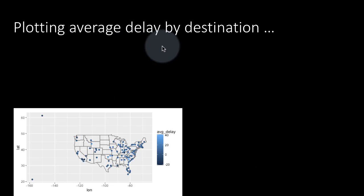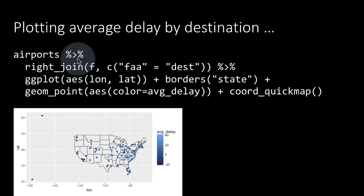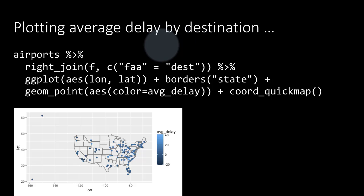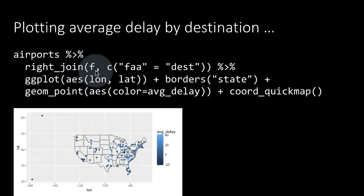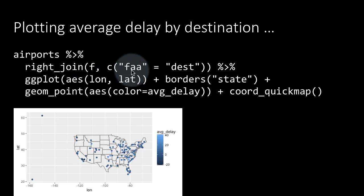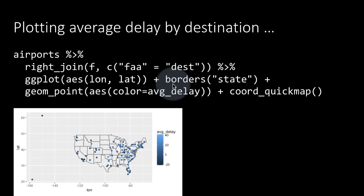Now we want to plot the average delay by destination. We do airports right join f, because to plot we need the latitude and longitude, and to get those we need to join the destination airports to the airports table. We could have done an inner join — that would have been fine — but we are emphasizing that we are only interested in the destination airports. We map FAA code of the airport to the destination code from the flights table, then plot latitude and longitude.